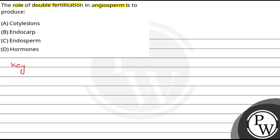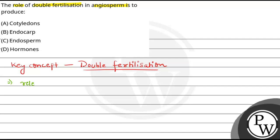If we talk about the concept of this question, it will be double fertilization. Double fertilization is a process in angiospermic plants in which, after the pollen tube enters the synergids, it releases two male gametes.